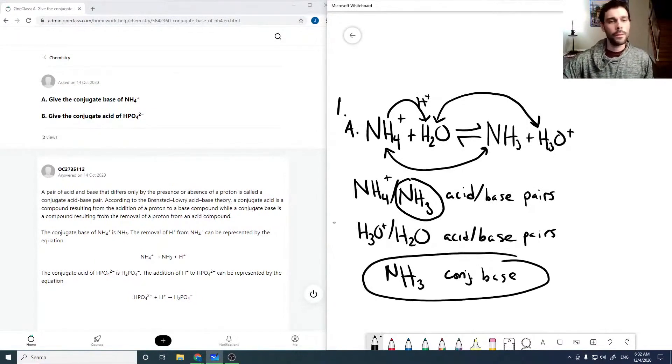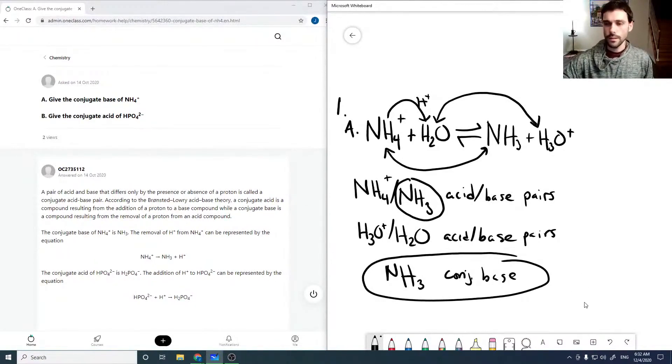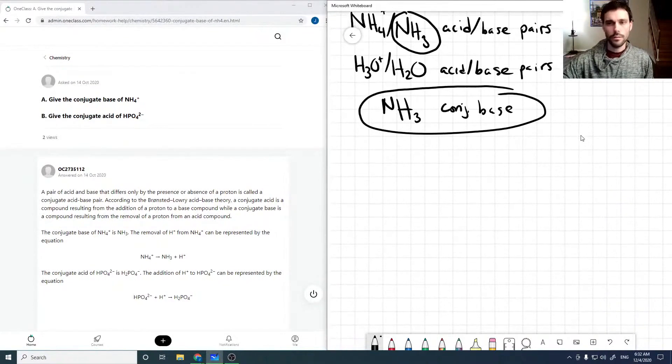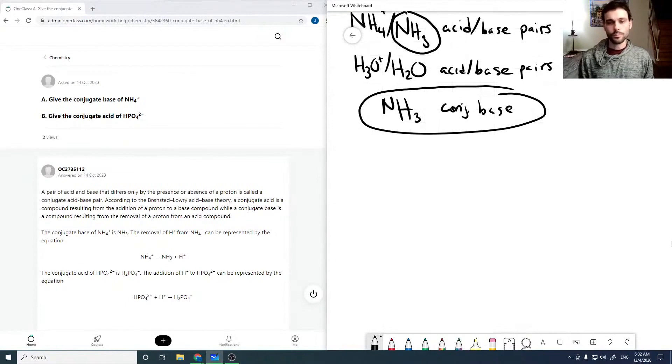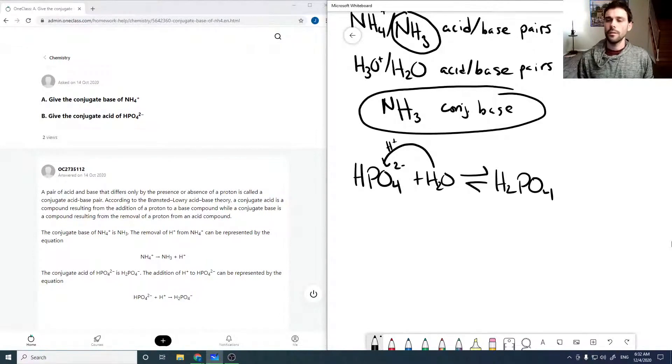Now for part two: give the conjugate acid of HPO4 2-. For conjugate acid, we're talking about a base reaction here. We've got HPO4 2- accepting a hydrogen from H2O to give H2PO4- plus OH-.